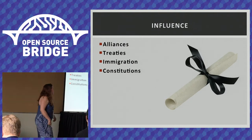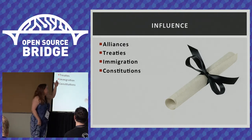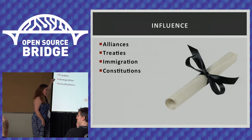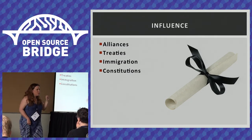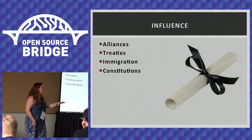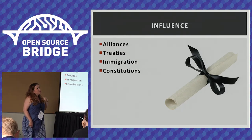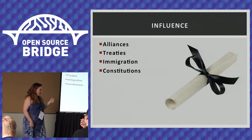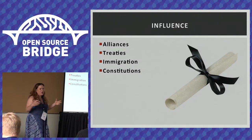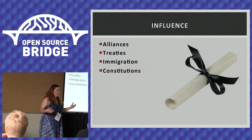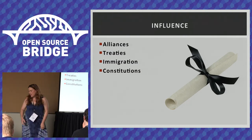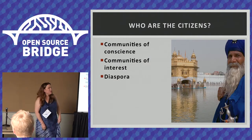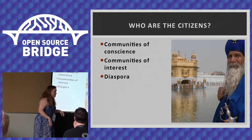Some things that nations have that make them more than just a community are alliances and treaties with other nations, immigration rules about who gets to be a citizen, and constitutions. Constitutions are something I've just started thinking about — what kind of documentation is actually handling your community? Where are your written rules? Where is that guiding your community in ways that's not just tribal knowledge or constant conversation? Who are citizens, potentially, of virtual democracies?